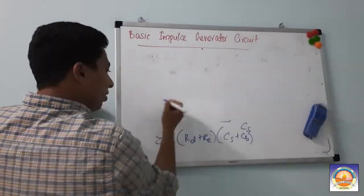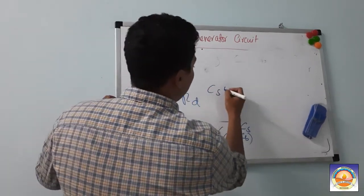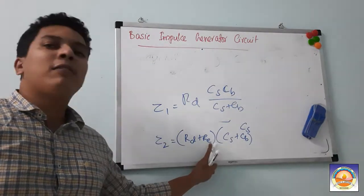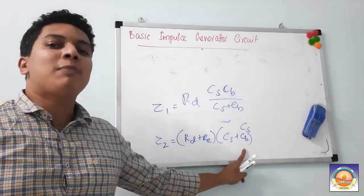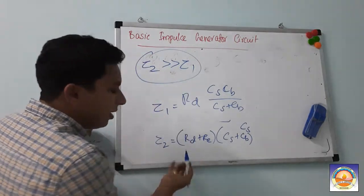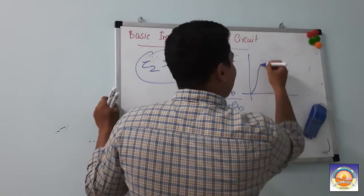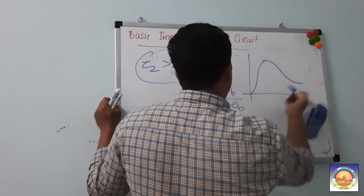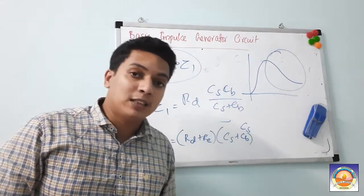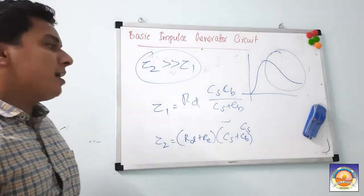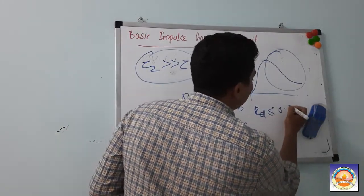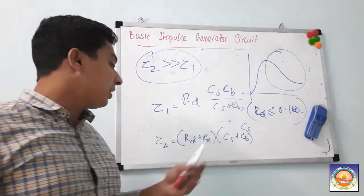The first part of the impulse waveform is created during the charging process with a smaller time constant tau1, and the tail part during discharging with a larger time constant tau2. You can control both time constants by adjusting Rd and Re values. The important factor is that Rd ≤ 0.1 × Re.